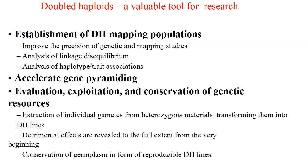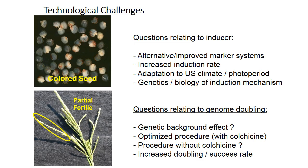Evaluation, exploitation and conservation of genetic resources. Extraction of individual gametes from heterozygous material and transferring them into double haploid lines. Detrimental effects are revealed to the full extent from the very beginning. Conservation of germplasm in the form of reproducible double haploid lines. The technological challenges in production of double haploid lines include questions relating to inducers.